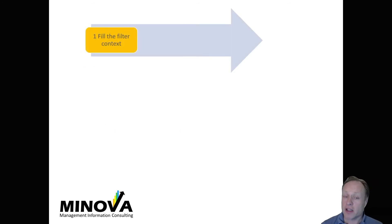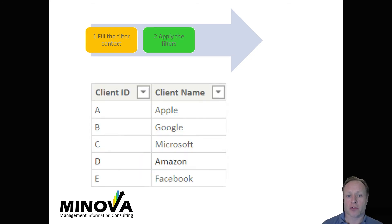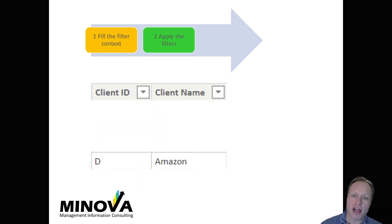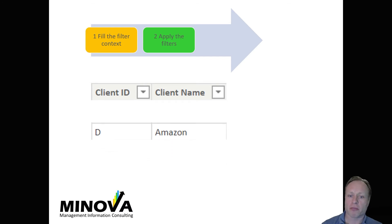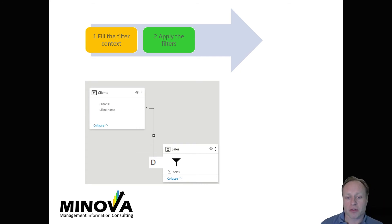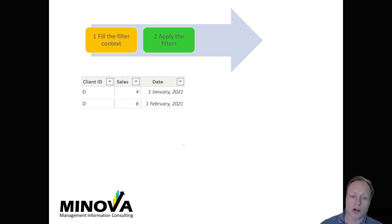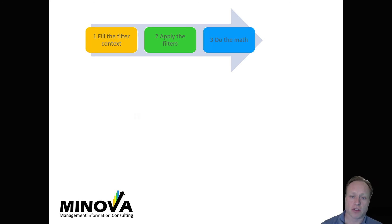So the first thing that happens is that the filter context gets filled. In this example, Amazon is going to get added into that filter context. Next, the filters are going to get applied — so within the clients table, a filter on Amazon is applied. Then on account of the relationship, that filter on client — which is Amazon — is going to get propagated to the sales table, and the sales table is also going to get filtered down to just that one client. Next, the math gets done, so after the filters have been applied, there's only one client left.